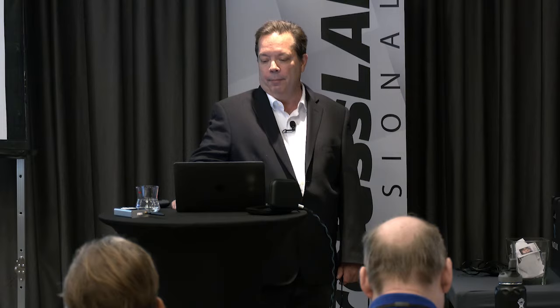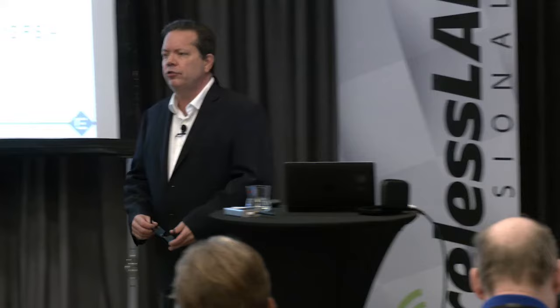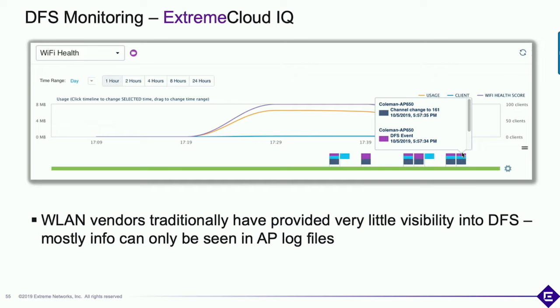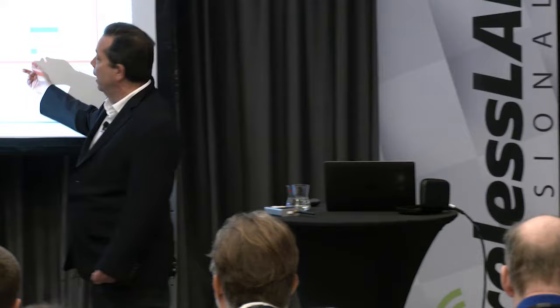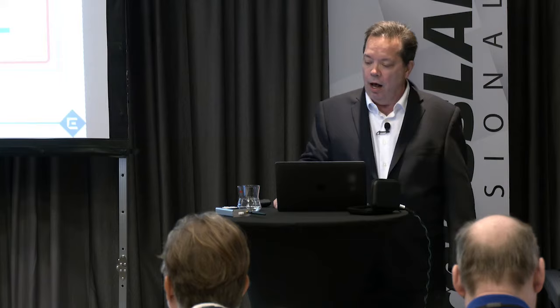Wireless LAN vendors have traditionally been really poor at giving you DFS visibility. Here's a plug for Extreme Networks — our cloud management solution, formerly known as HiveManager, is now called ExtremeCloud IQ. We now provide cloud visibility for DFS events. Most vendors only give you log files. With our APs we can give you up to 30 days of DFS events in a visual timeline view, and we can also show individual AP-level views and top-five APs with the most DFS events.